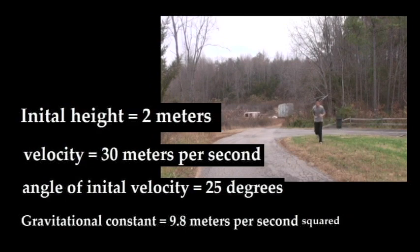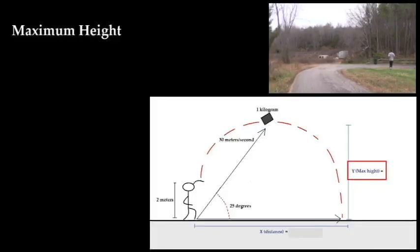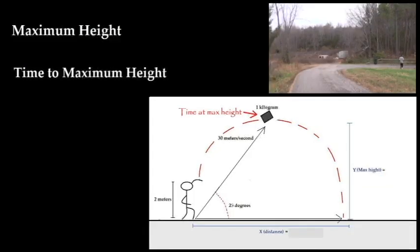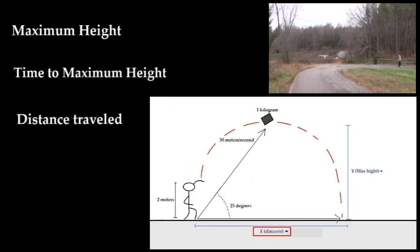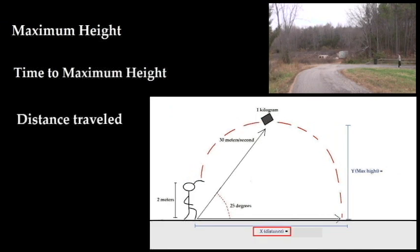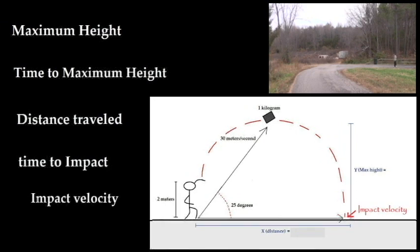Using these informations, we will find out: the maximum height of the object; the time at maximum height, i.e., the time it took the object to reach the maximum height; the horizontal distance the object traveled; the final time, i.e., the time it took to impact; and the impact velocity.